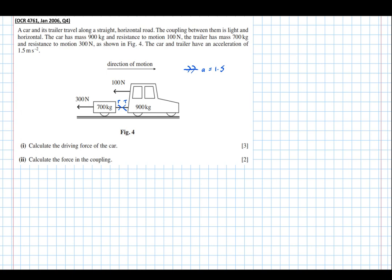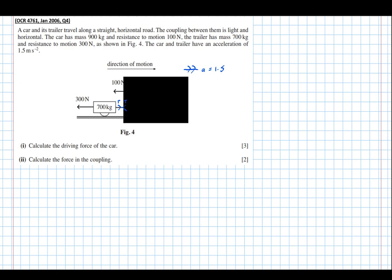Both tensions are equal, otherwise the tow bar would snap. To calculate the driving force of the car, it would help to find the tension first. So we cover up one of the particles — we only want to consider one particle at a time. Let's pretend the car doesn't exist, so all we've got is the trailer. Part one: resolving for the trailer.